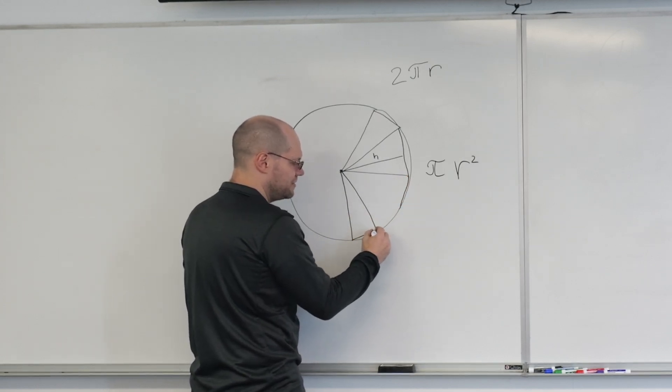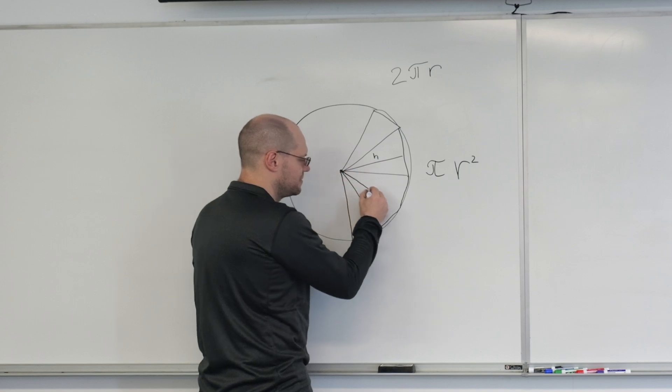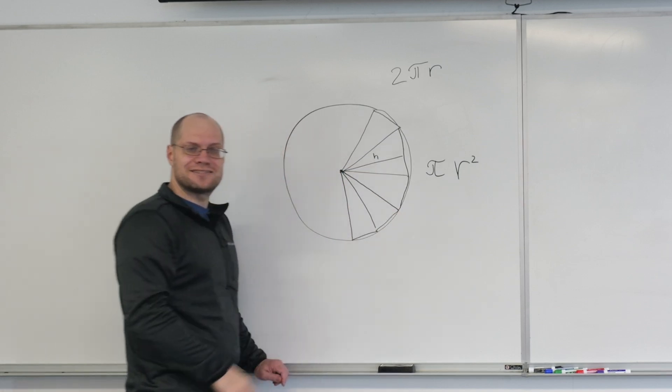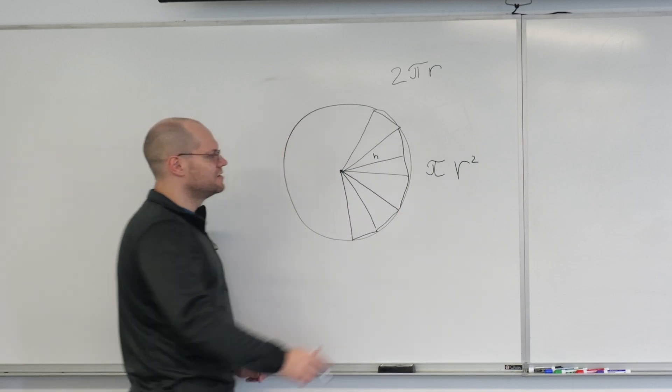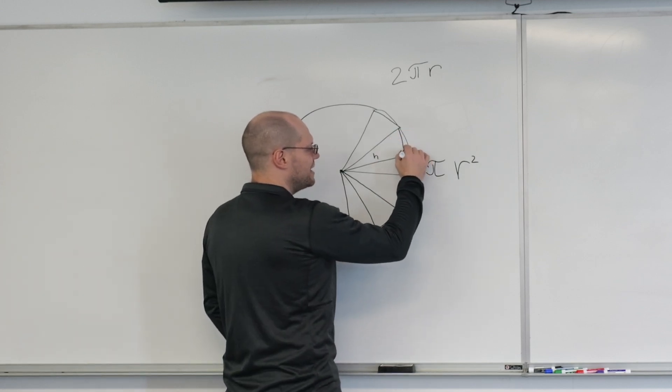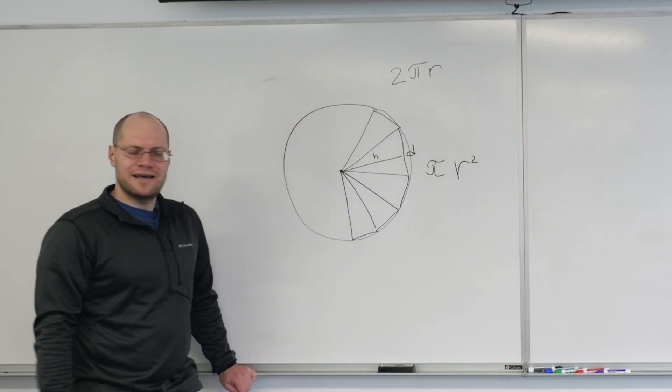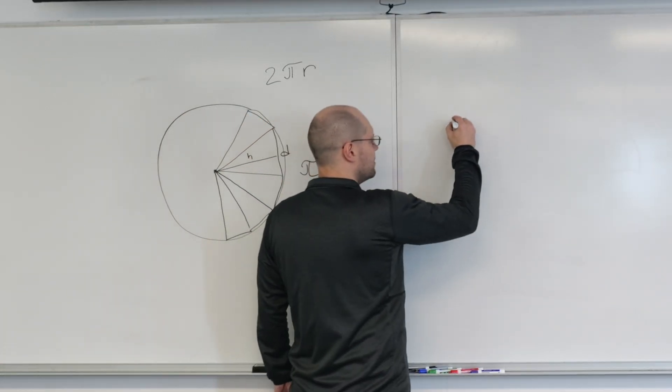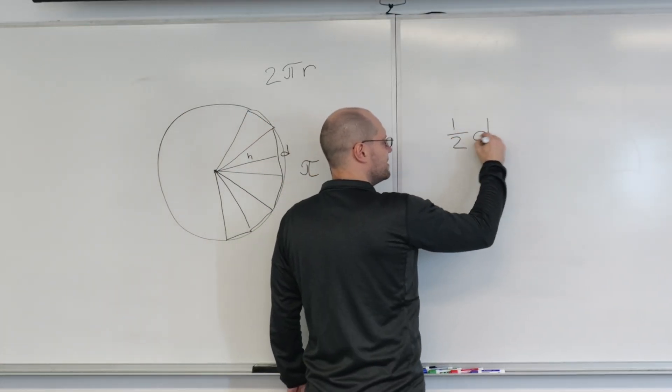Now, imagine these are all the same. Given the quality of drawings that I've been delivering in this class, it's not much of a stretch. And the length of this side is D. Then the area of the triangle is one half DH.